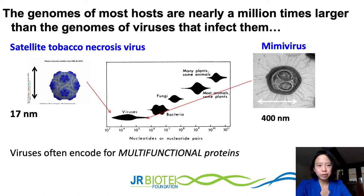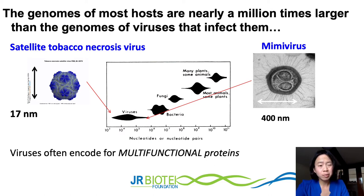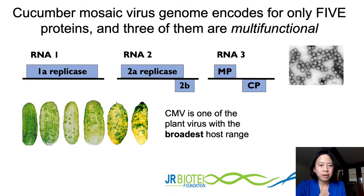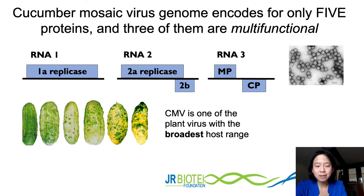Viruses often have very small genomes — their host genomes can be even a million times larger. Satellite tobacco necrosis virus is one of the smallest, with a genome size of only 17 nanometers. To cope with their small genome, viruses often encode multifunctional proteins. For example, cucumber mosaic virus encodes only five proteins, three of which have multifunctional uses. CMV has one of the broadest host ranges of any plant virus — found worldwide, first identified in cucumber, but also infecting economically important crops such as tomatoes, squash, zucchini, and tobacco.